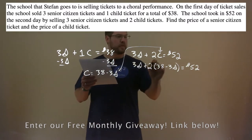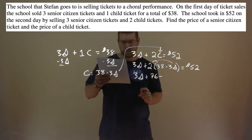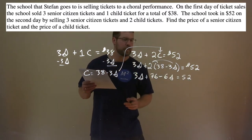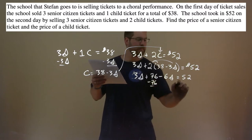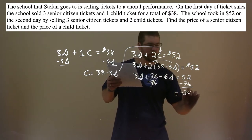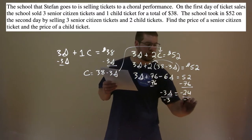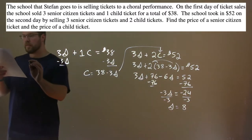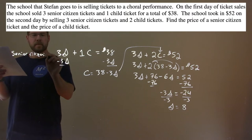Distribute the 2 across both parts: 3S comes down, 2 times 38 is 76, and 2 times minus 3S is minus 6S, equals 52. Combine like terms and subtract 76 from both sides: 52 minus 76 is negative 24, and 3S minus 6S is minus 3S. Divide both sides by minus 3, and S equals $8. The senior citizen ticket is $8.